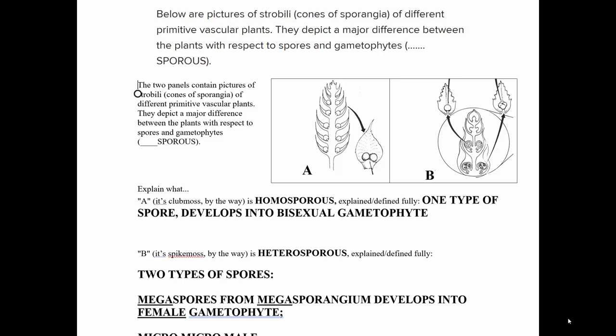This picture shows on the left a club moss, which has sporangia that are all uniform — it's a type of lycophyte. On the right is a spike moss, which shows down below those big megaspores, and the upper leaf axils have microspores.